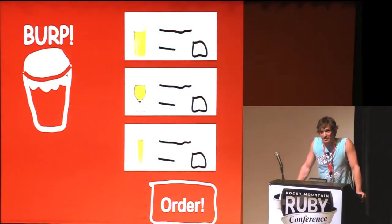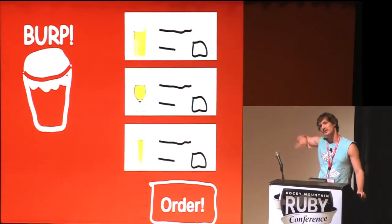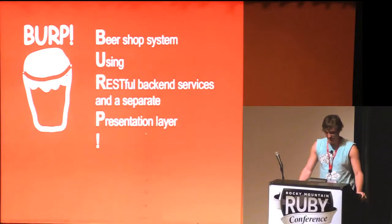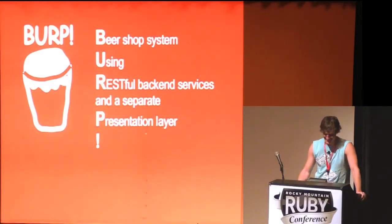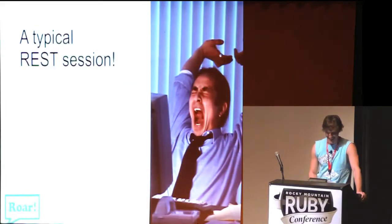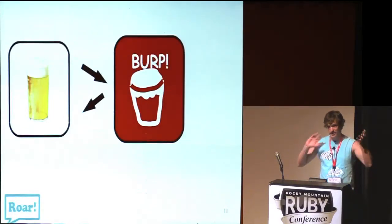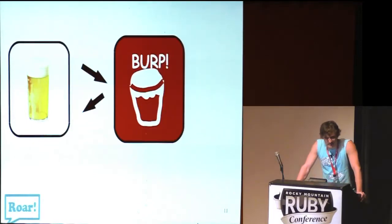To show you hypermedia, I have an imaginary system called BURP. It's a beer ordering service — you create an order, browse beers, choose beers, put them in the order, and say order, and the waiter brings you beers. By the way, BURP is the abbreviation for a Beer shop system Using RESTful backend services and a separate Presentation layer. Let's see a typical REST session. On the left side is the REST service, on the right side is the REST client.